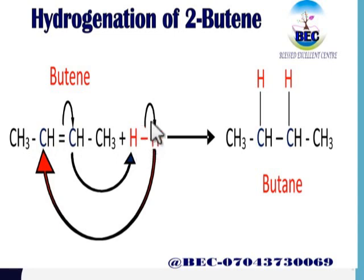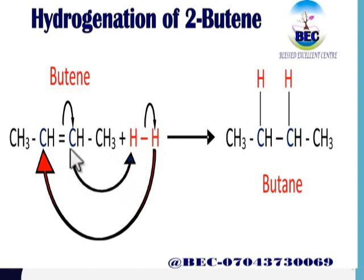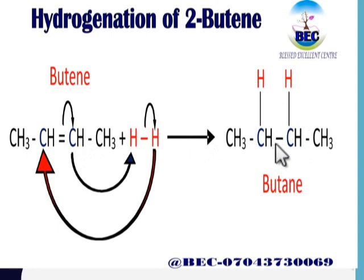The carbon where the arrow points accepts the two electrons and becomes negatively charged, while the other carbon that gives out the two electrons becomes positively charged. For hydrogen, the reagent, one end becomes negatively charged and the other positively charged. In reaction mechanism, the arrow shows electron movement — electrons move from the negative terminal to the positive terminal. The negatively charged carbon transfers its electron to the hydrogen, and the opposite charges come together to form the product.